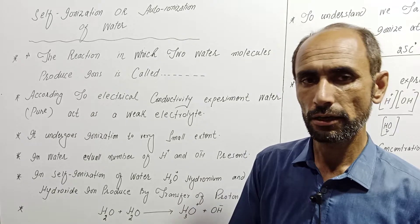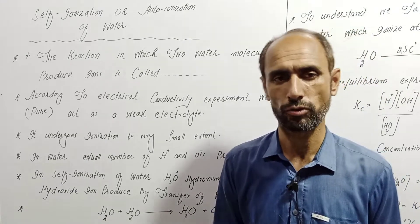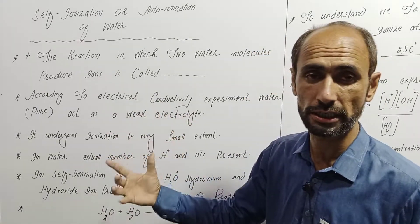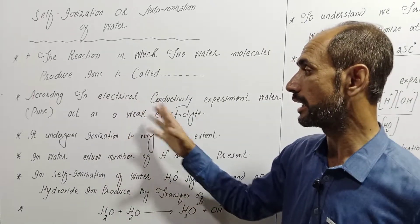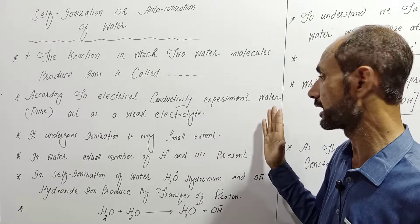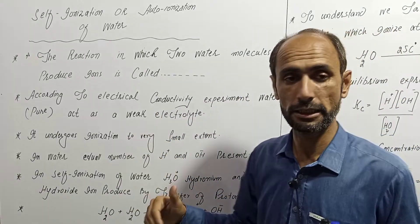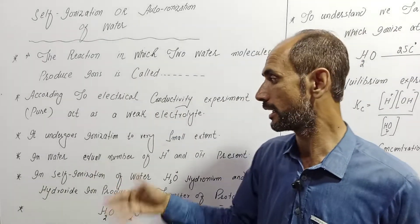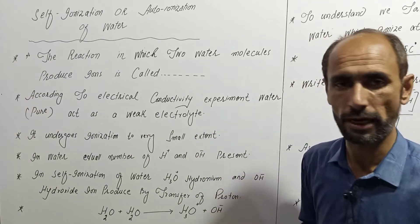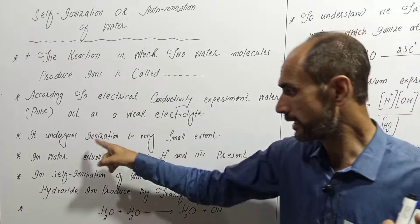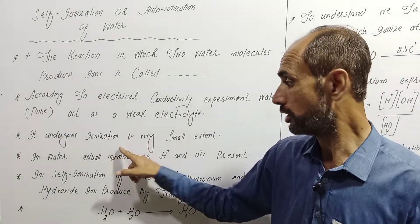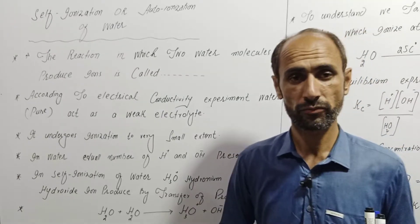According to the electrical conductivity experiment, water is a weak electrolyte, so it undergoes ionization to a small extent.